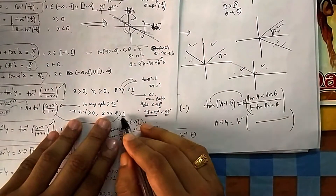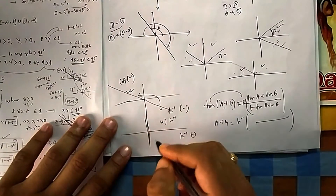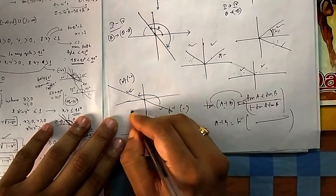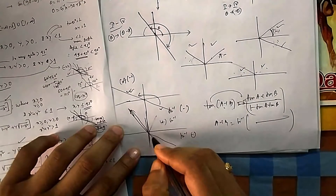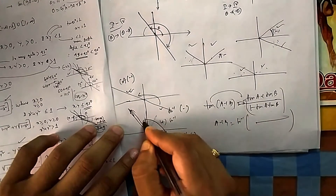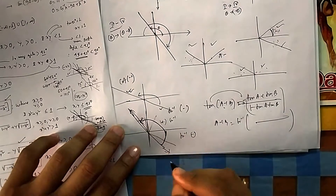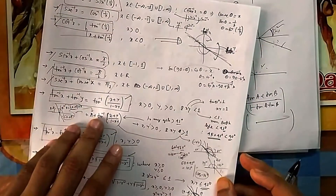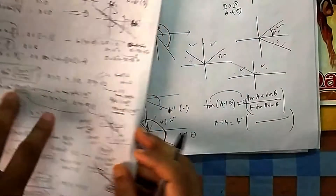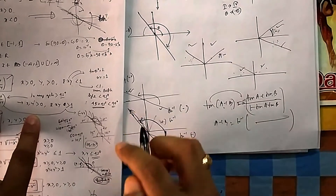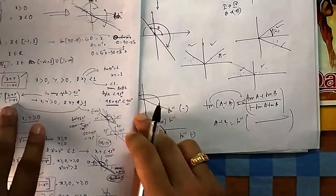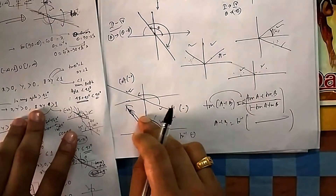If you add two angles both greater than 45°, say 60°+60°=120°, the result lands in the second quadrant. But tan⁻¹ cannot give a second quadrant answer — it gives a fourth quadrant answer for negative values. So you need to shift from the fourth quadrant to the second quadrant by adding π. That's why the formula becomes π + tan⁻¹((x+y)/(1-xy)) when xy > 1.